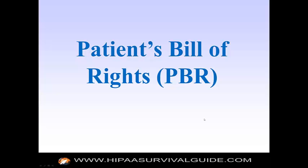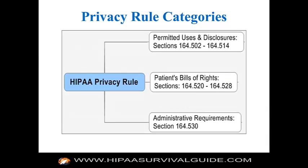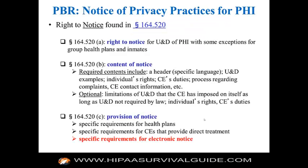We're now going to talk about business associates and their intersection with the patient's bill of rights, which is really a subset of the privacy rule. The permitted uses and disclosures run from 164.502 through 164.514; the patient's bill of rights runs from 164.520 through 164.528, and 164.530 covers the administrative requirements.